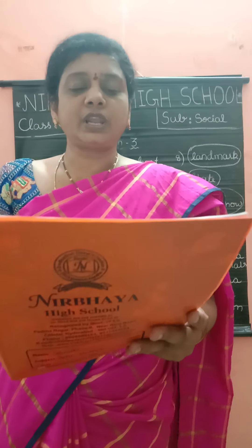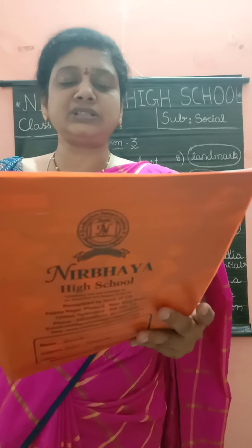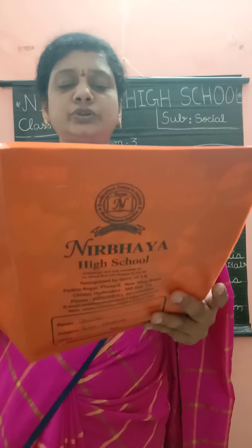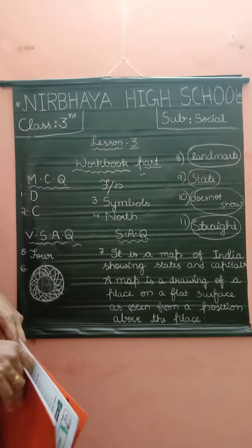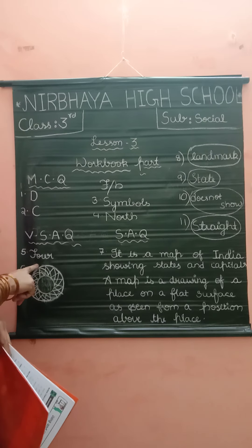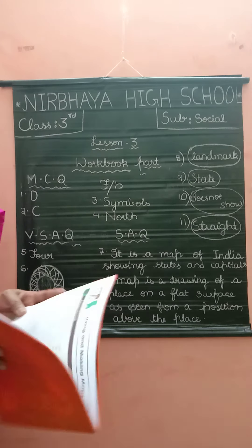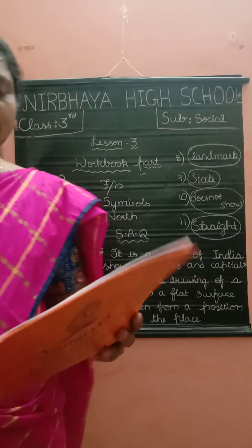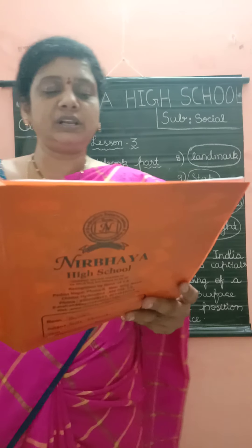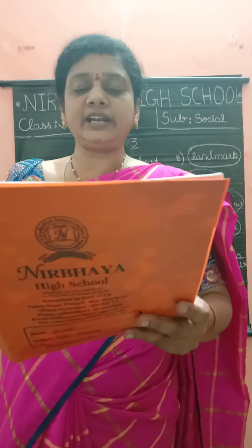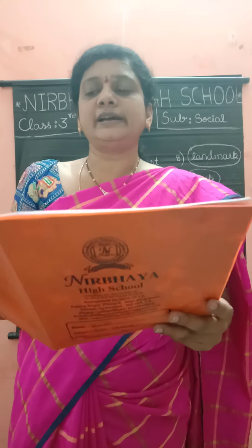Very short answer question: how many main directions are used to find locations on a map? How many directions, children? Four. Yes. And the sixth one: draw a symbol of a dustbin present in your classroom.